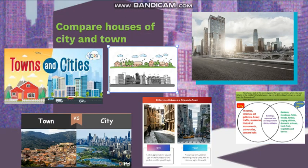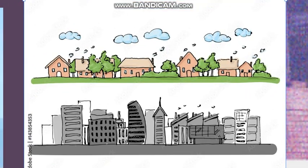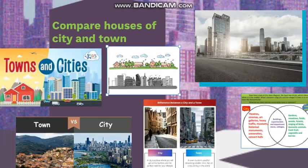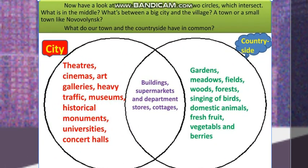As I said before, looking at another picture of a city compared to a town, we can see the difference between them. The city is the one at the bottom of the picture, and the town is on the top. We're going to draw a Venn diagram — two circles that are intersecting or meeting, connected together — to find the differences and similarities between cities and towns. In the middle, we can see the similarities: they both have buildings, supermarkets, department stores, and cottages.